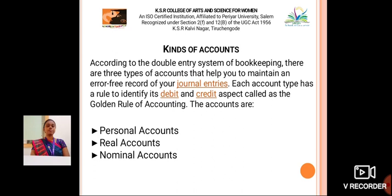there are three types of accounts that help you maintain an error-free record of your journal entries. Each account type has a rule to identify its debit and credit aspect, called as the golden rules of accounting.